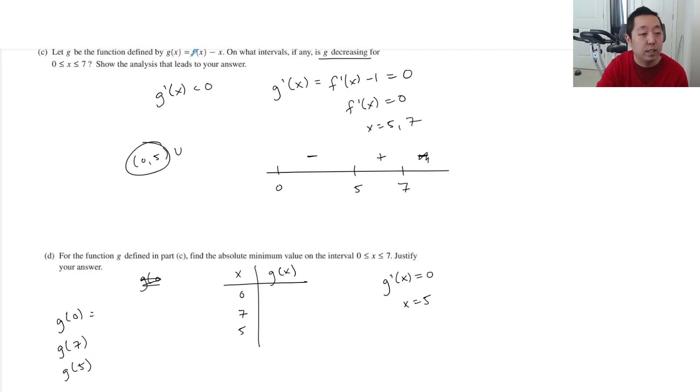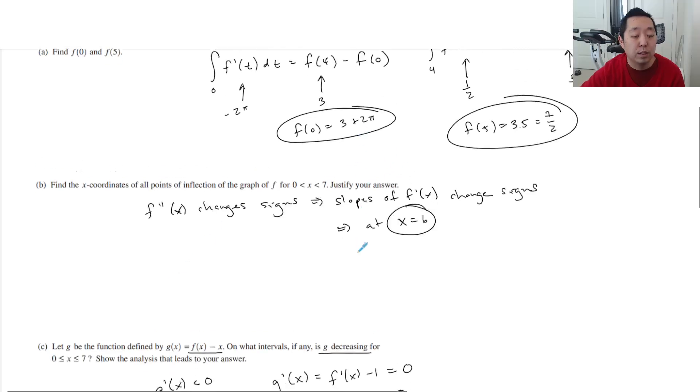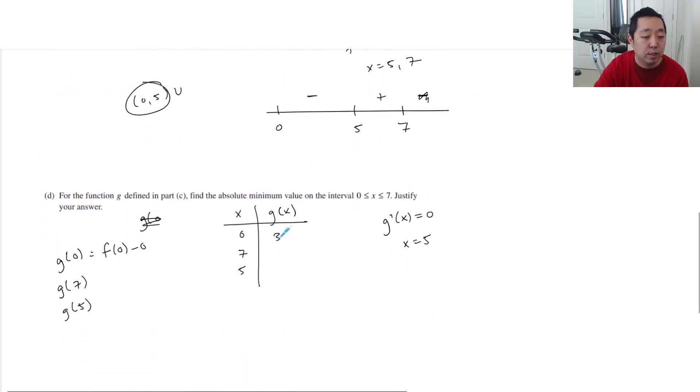So g of 0, based on this function, is f of 0 minus 0. And we found what f of 0 was. f of 0 was 3 plus 2 pi. So this is 3 plus 2 pi.